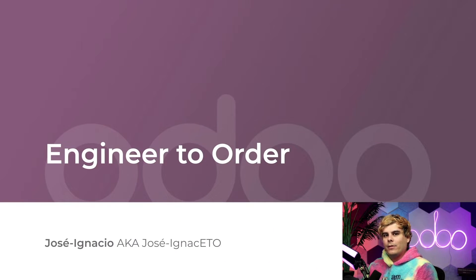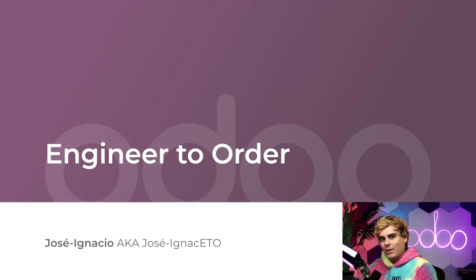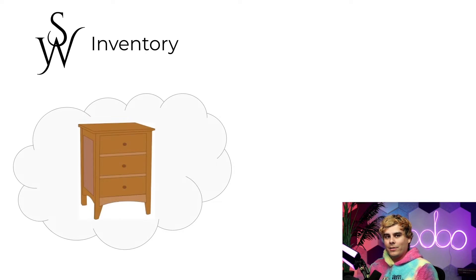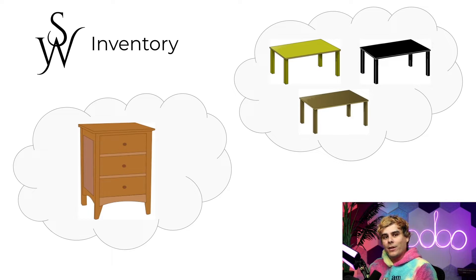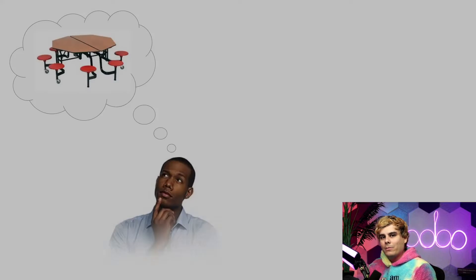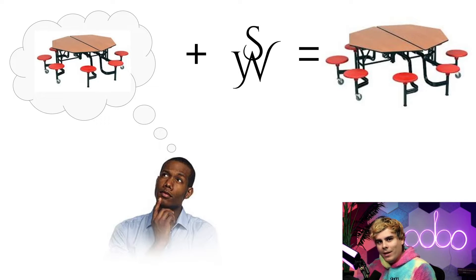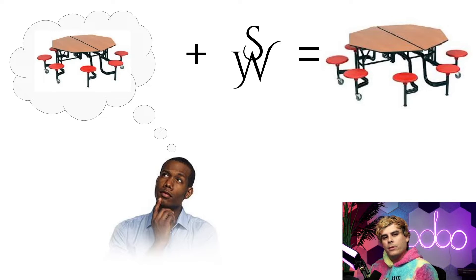Hello, my Odoo Cadets, and welcome back for another training mission at Stealthywood HQ. Today's assignment: complete a sales order for a customer who wants a dining table designed and manufactured to their exact specification. Here at Stealthywood we have a wide selection of products available in our regular inventory, including standard products as well as those with variants, enabling customers to choose from a range of customization options. However, sometimes a customer wants us to design and manufacture an item that we don't normally sell.